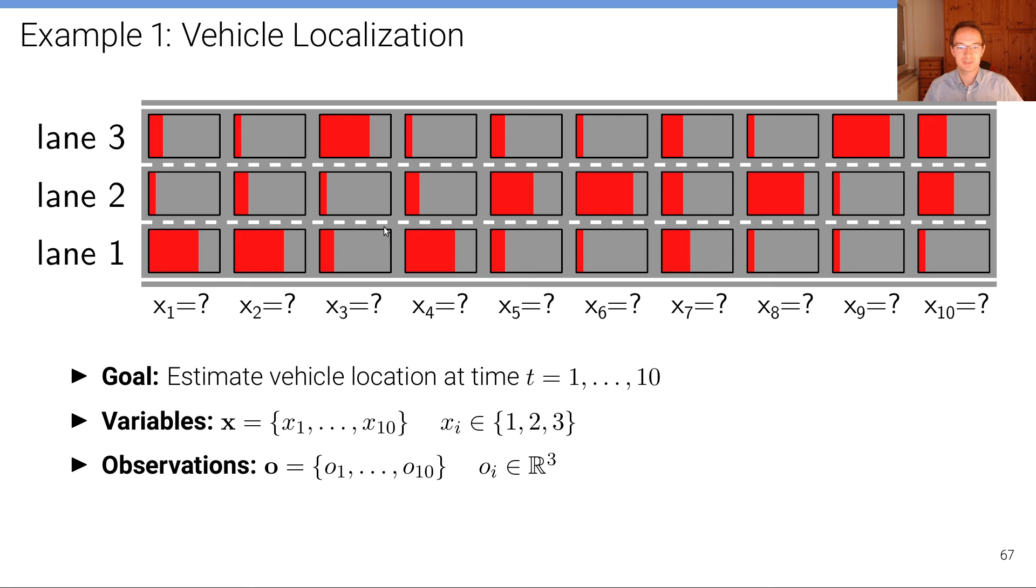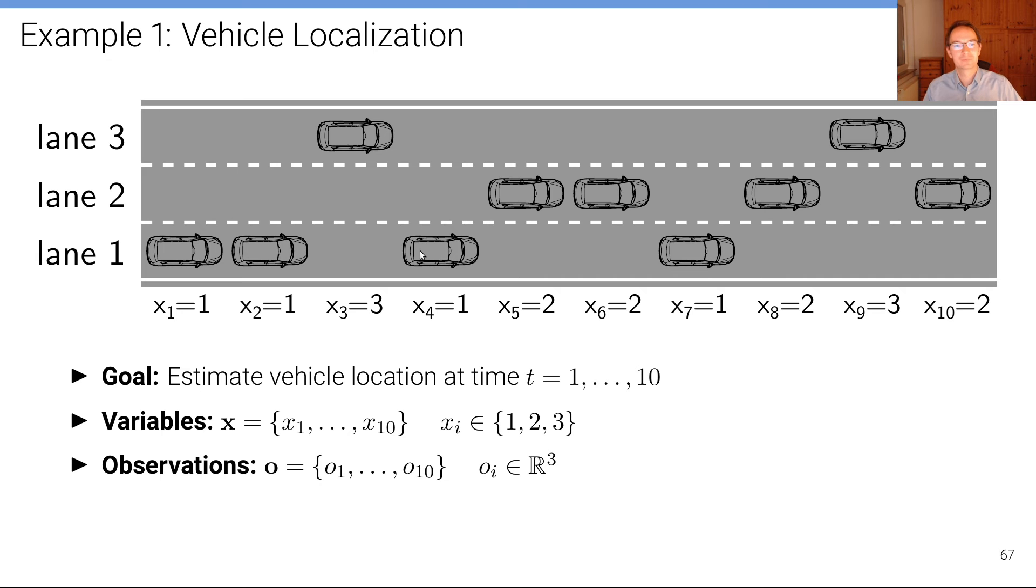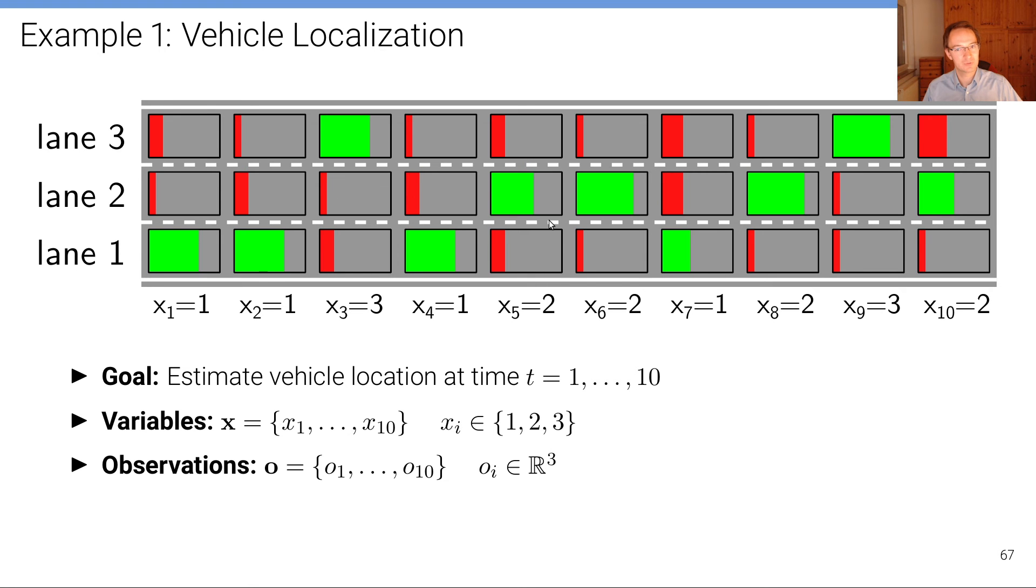We can do the same for the other observations. What happens of course if we just naively take the most likely state independently at each time step according to the perception model, we see such a result where we have a very implausible transition here, a transition that's physically implausible, and that we try to avoid now by integrating this prior knowledge using the help of graphical models because this is not a very plausible inference result.